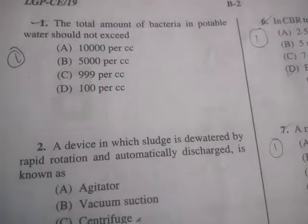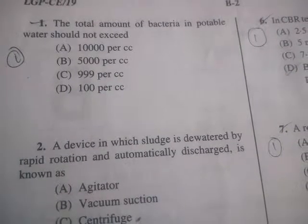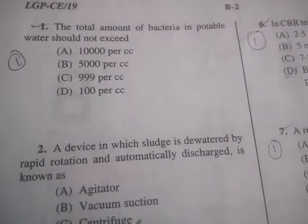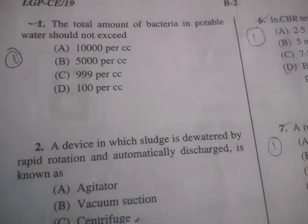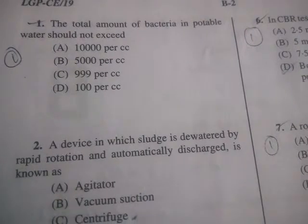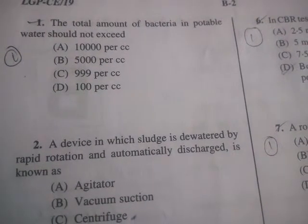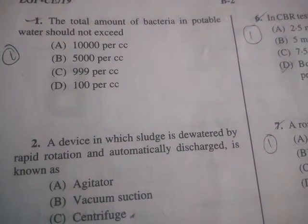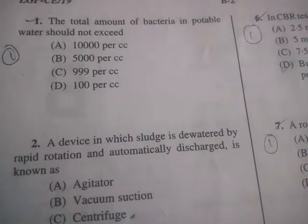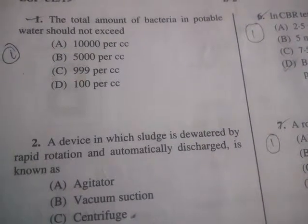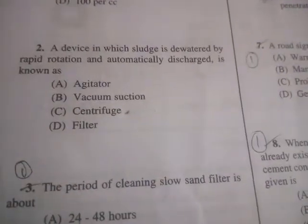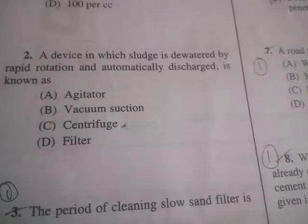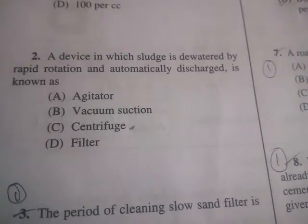Hello friends, today I will discuss the questions of a PSC lecture held in 2019. It is basically for civil engineers. First question: the total amount of bacteria in portable water should not exceed — the correct answer is D: 100 per cc.